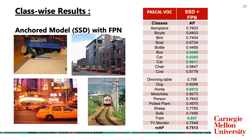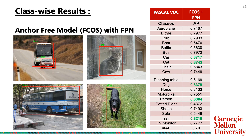We perform several experiments and evaluate our results on the Pascal VOC 2007 test dataset. First, we combine the single shot detection anchored model with the FPN and achieve an MAP of 75.13. Next, we perform the second experiment combining FCOS with FPN on the same dataset and achieve an MAP of 73.13. We notice that even using anchor-free models, we achieve accuracy almost at par with state-of-the-art anchored models.